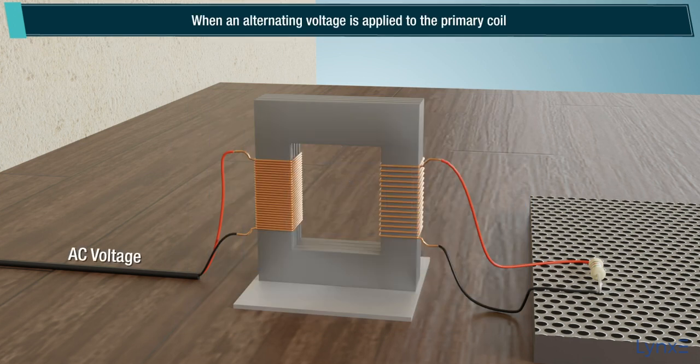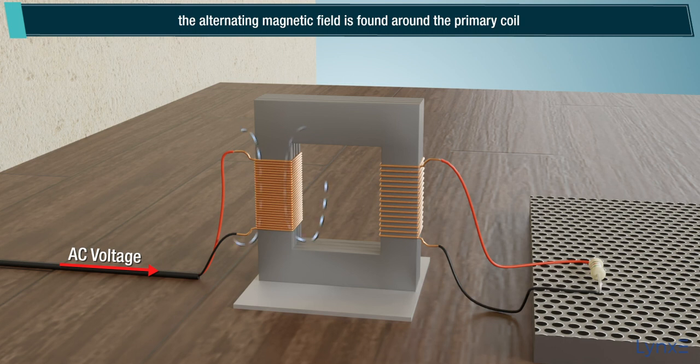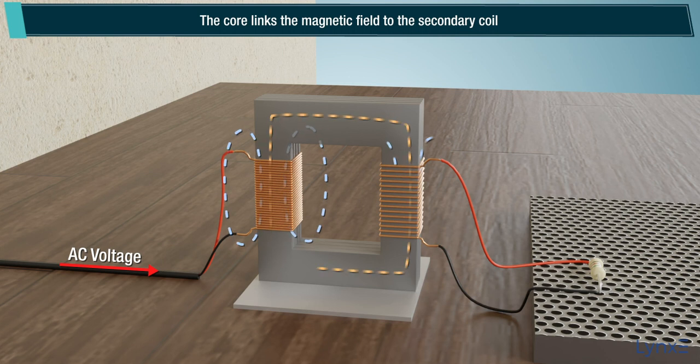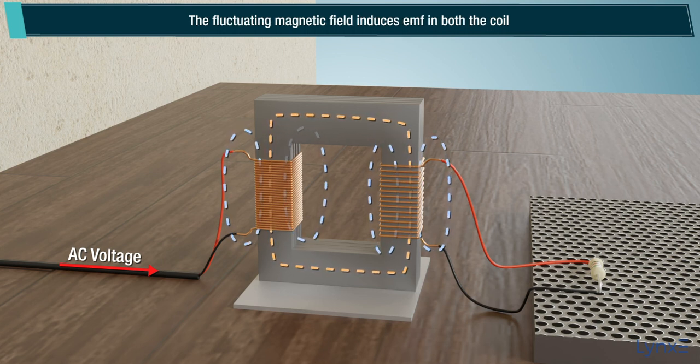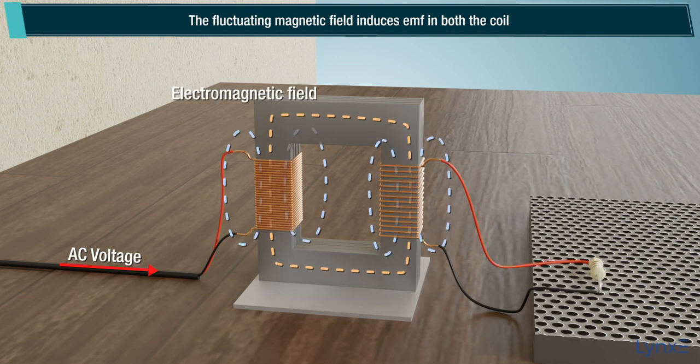When an alternating voltage is applied to the primary coil, the alternating magnetic field is found around the primary coil. The core links the magnetic field to the secondary coil. The fluctuating magnetic field induces EMF in both the coils.